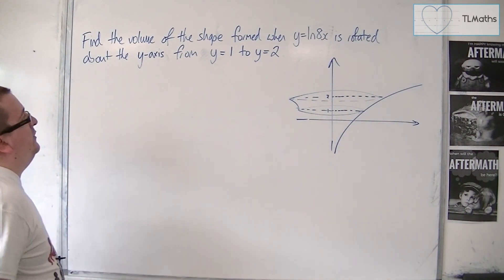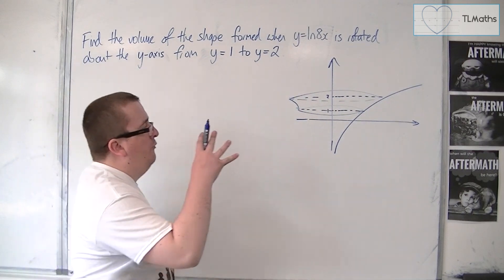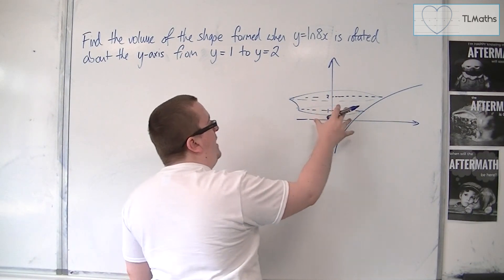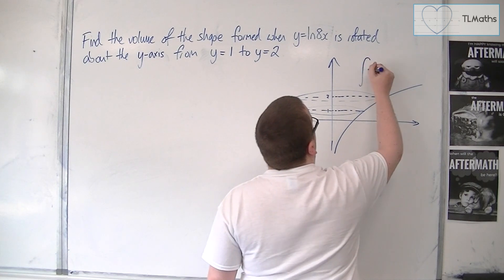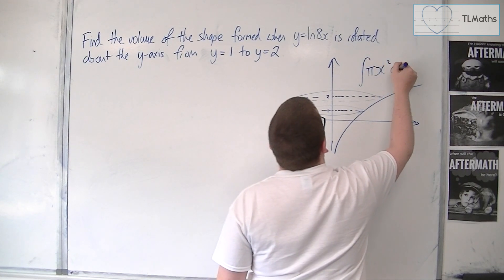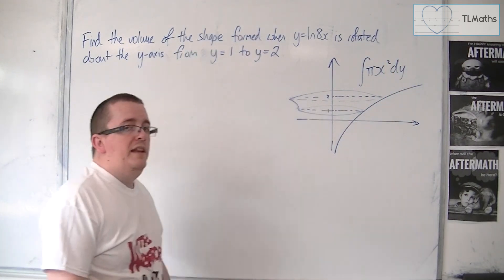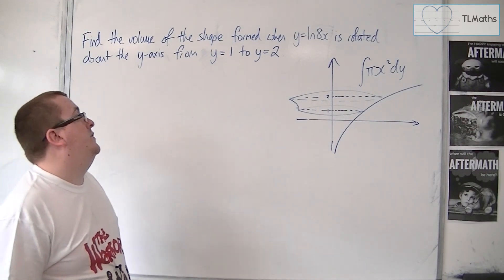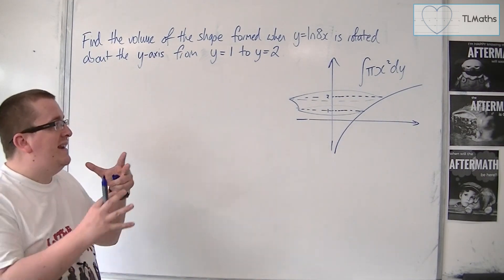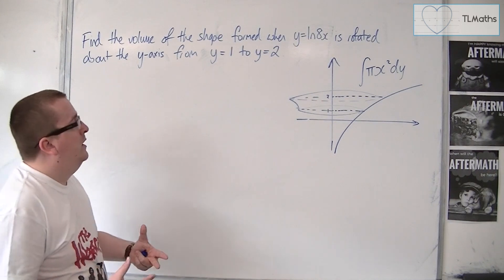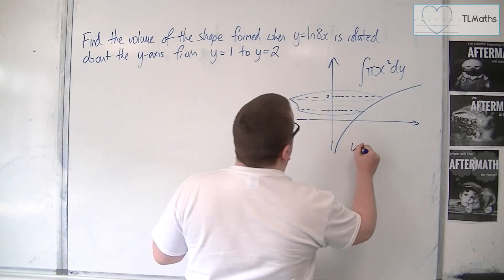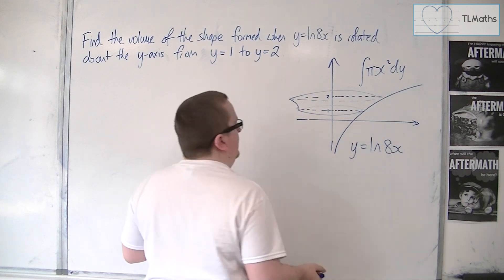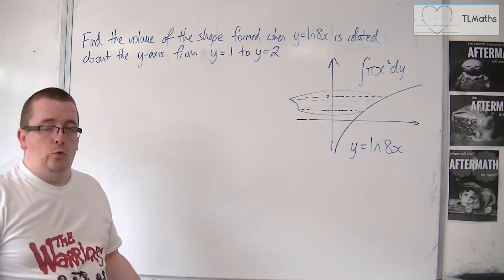We're going to find that exact volume. Now, for integrals that rotate about the y-axis, we're going to be using the integral of π x squared dy. Now, that does mean that you need to make sure you get x squared equals. So we need to go from y equals log of 8x to x squared equals.